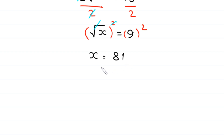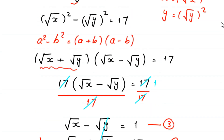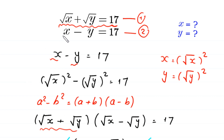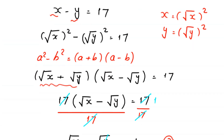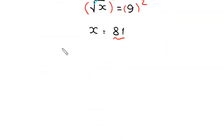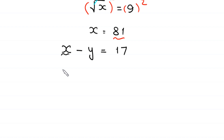Now, to find the value of y, we substitute x equals 81 into equation 2. Equation 2 is x minus y equals 17. Replacing x with 81, this equation becomes 81 minus y equals 17.